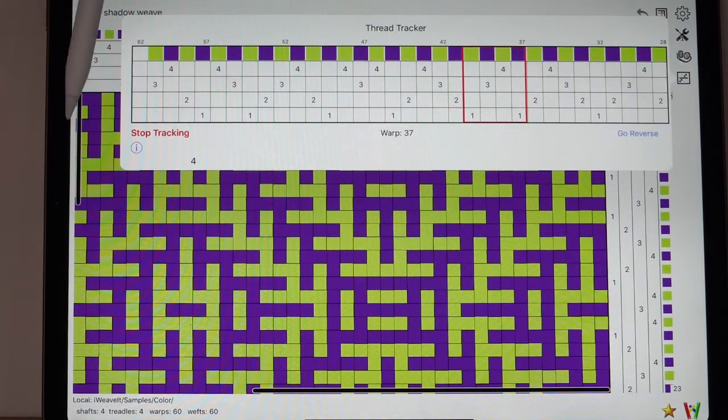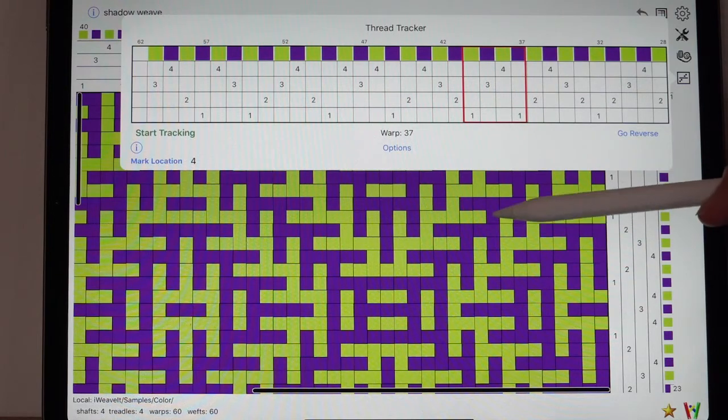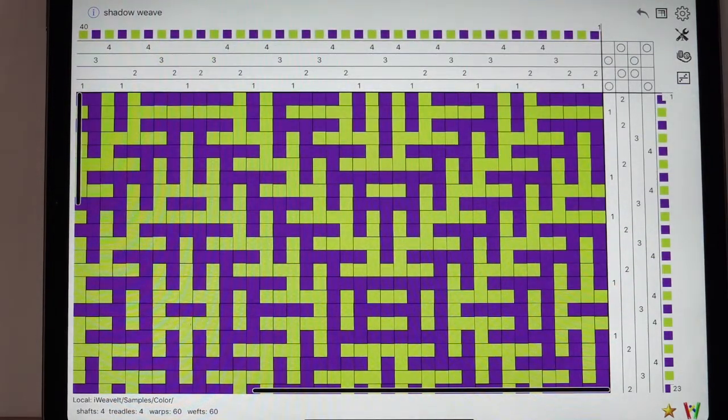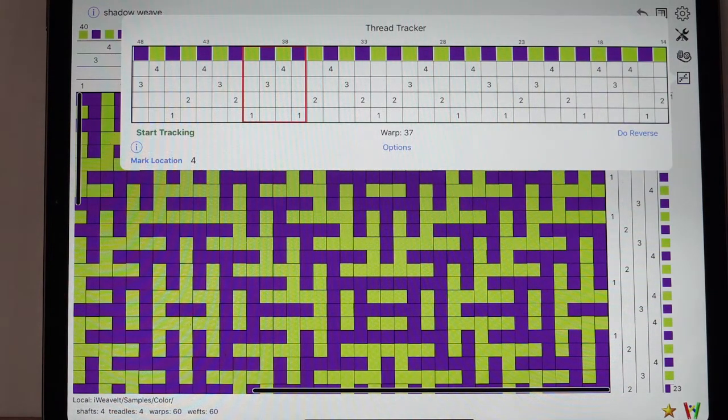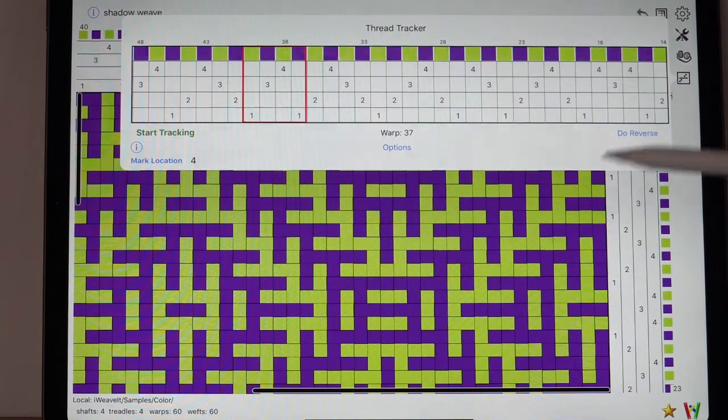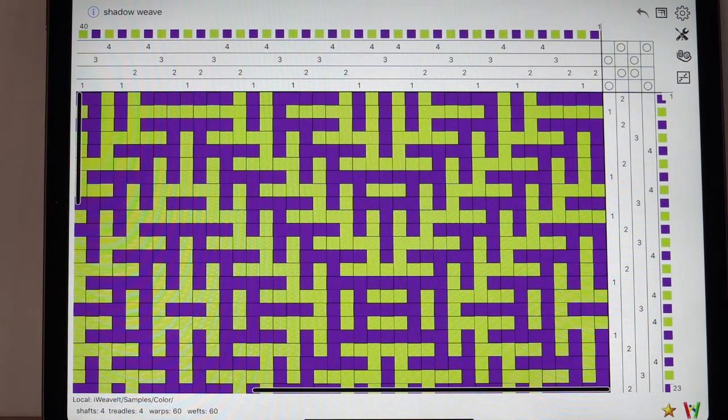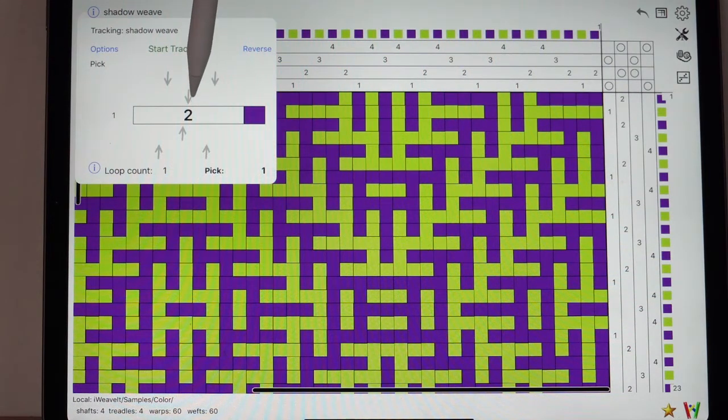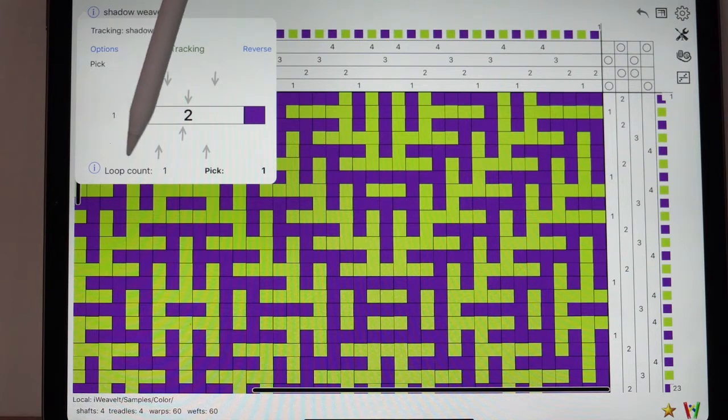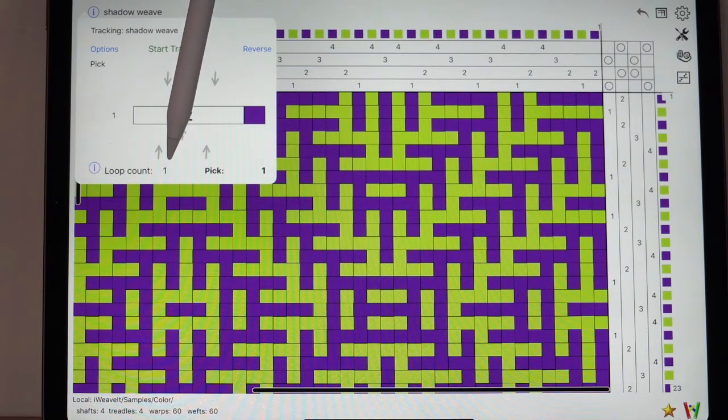Okay, and go forward, stop tracking, and then tap to reserve. When you come back to it and pick threading again, it remembers exactly where you were and it remembers all of your options. Next, I want to show you the treadling. So I pick the icon again and this time I pick track treadling. Here it's showing you the treadle to lift and this is the pick that you've just lifted. Up here you see the name. Here's your options. Here's your starts and stop tracking. Here's reverse. The loop count shows you how many times you've gone through the complete pattern. And the pick shows you again which pick you're currently on.